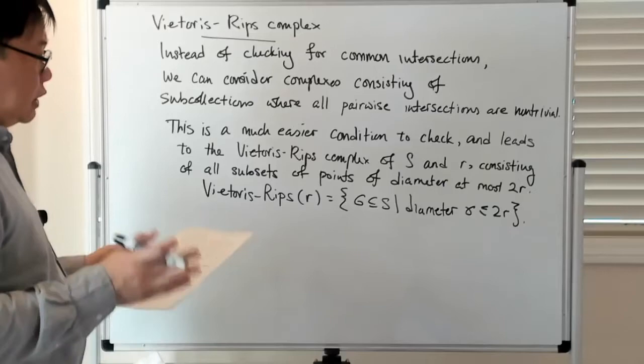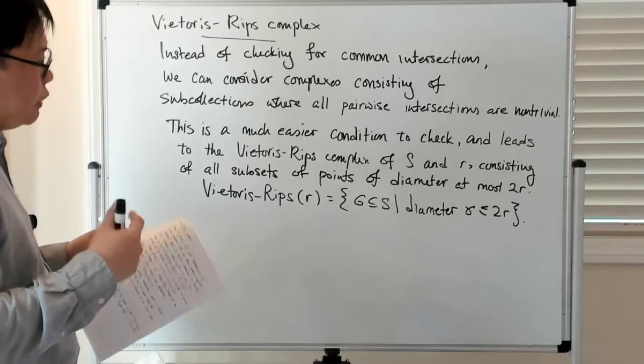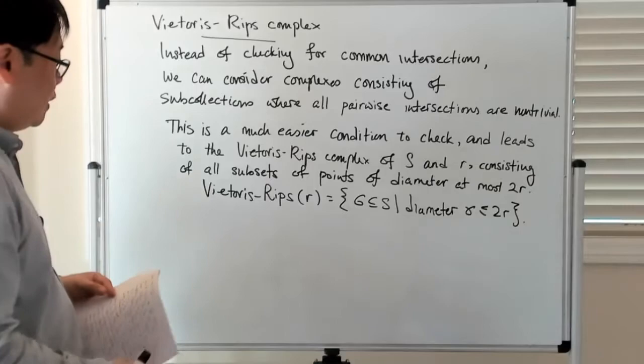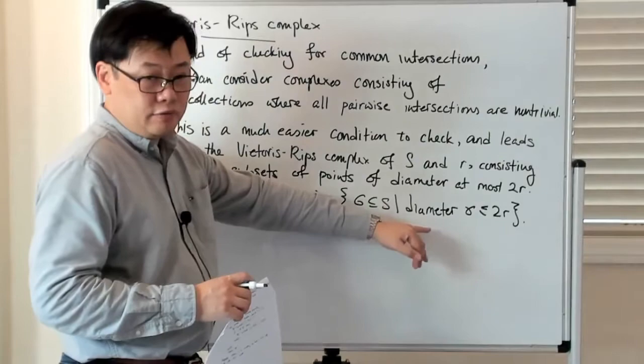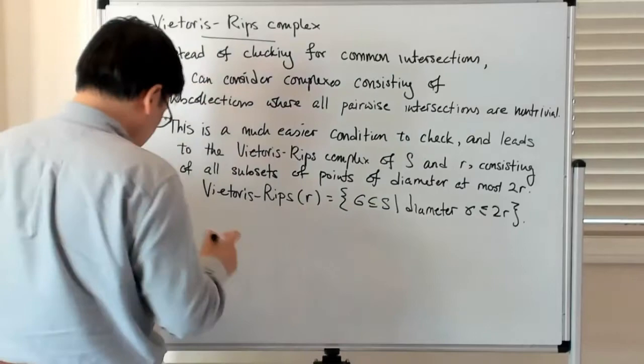And obviously if the diameter of this thing is less than or equal to 2R, then it will tell you that every single pairwise intersection of balls of radius R centered at those points will always be non-trivial. So some obvious immediate observations: this condition is obviously the condition for there being an edge in the Čech complex.